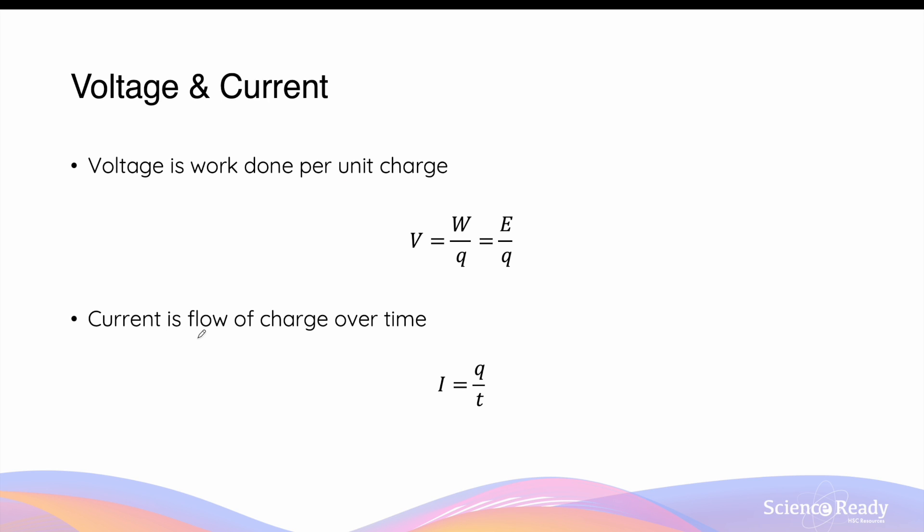Current is defined as a flow of charge, which is Q, over time. Mathematically, this is given by Q divided by T.